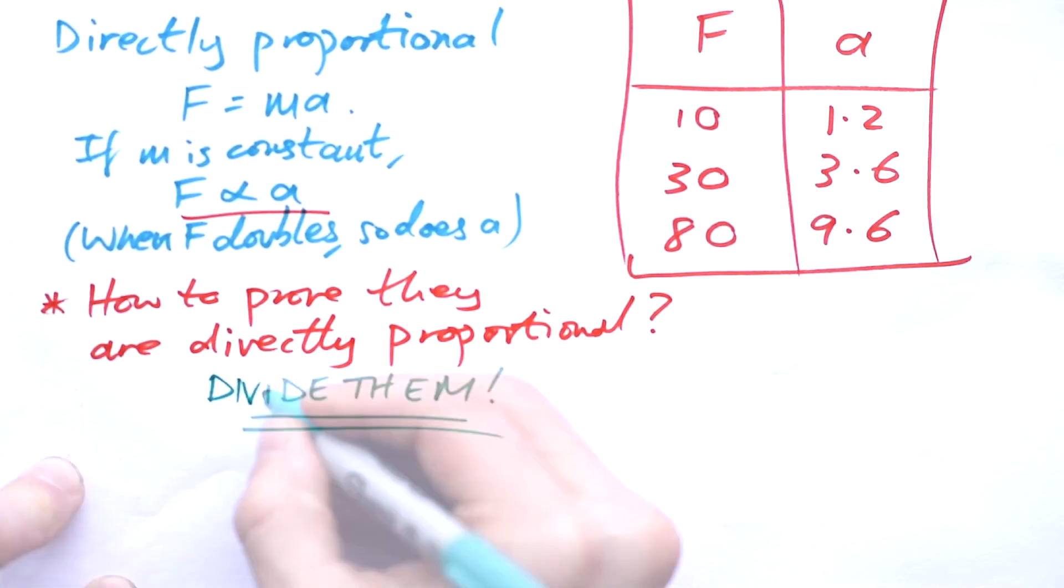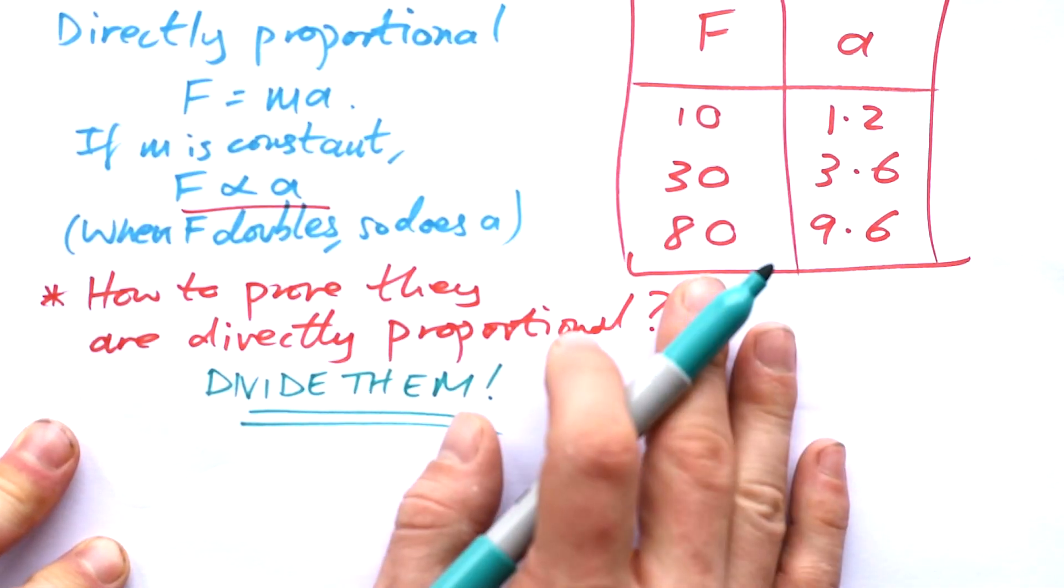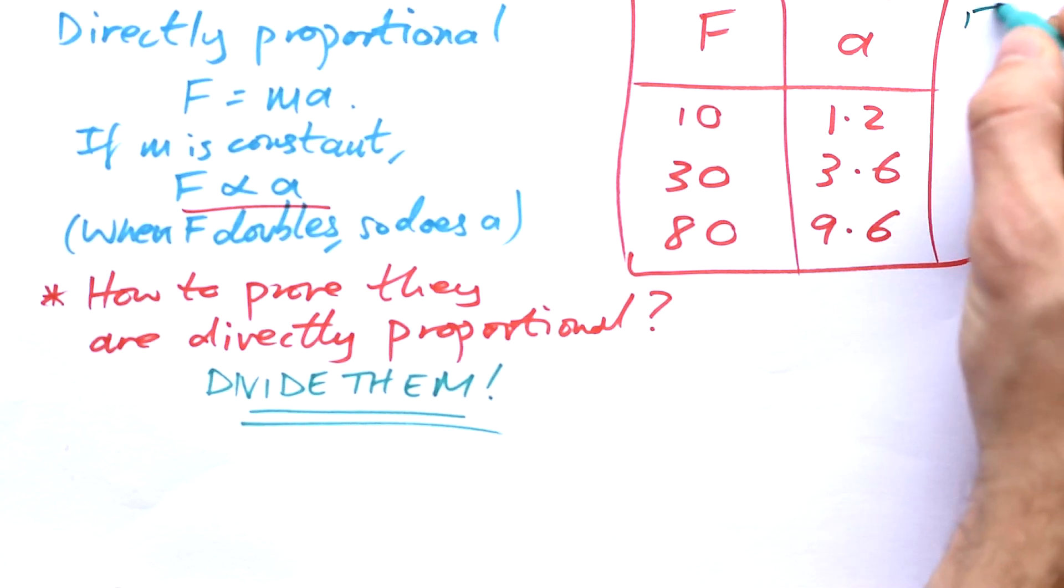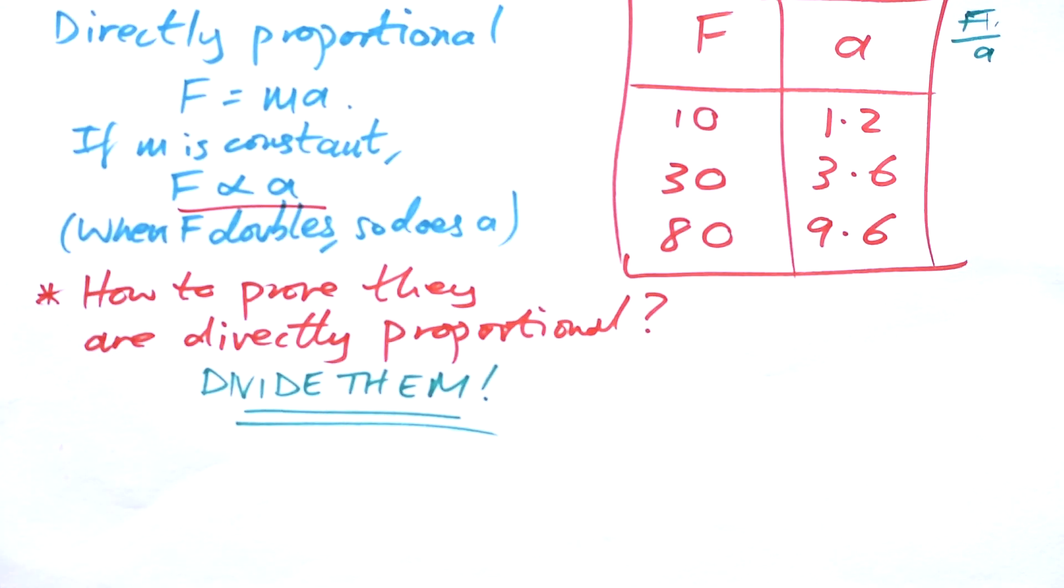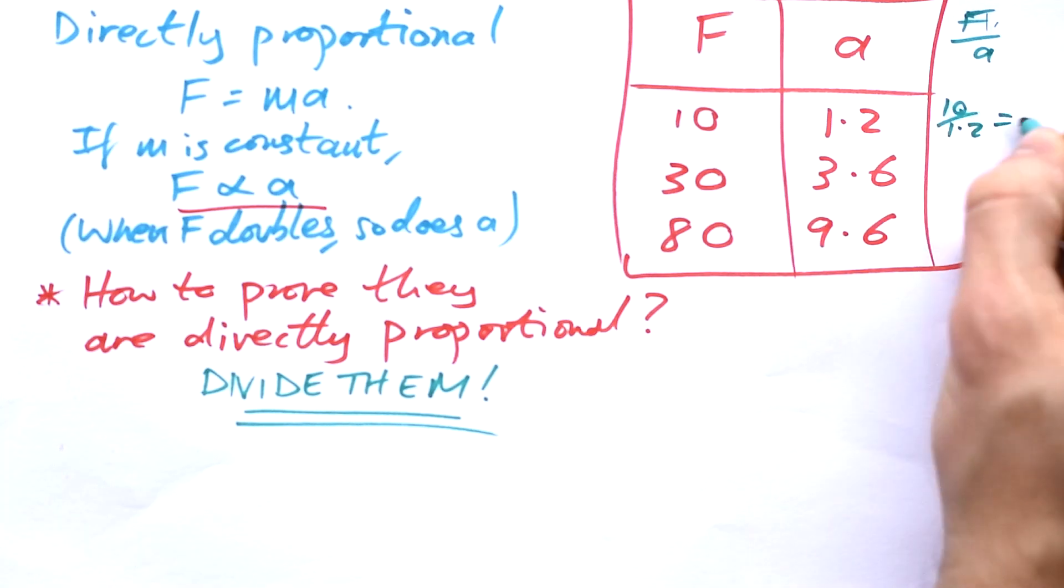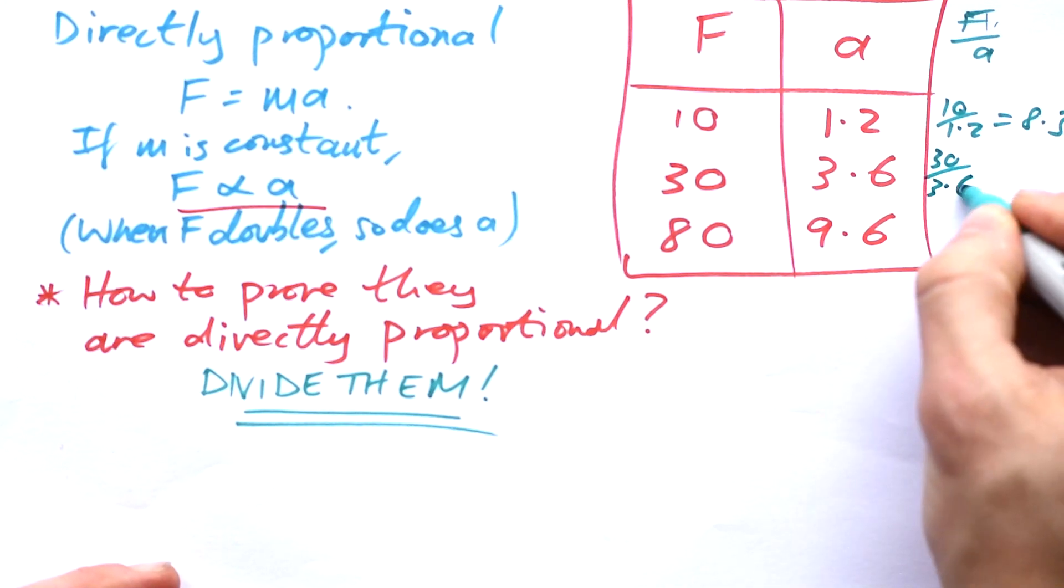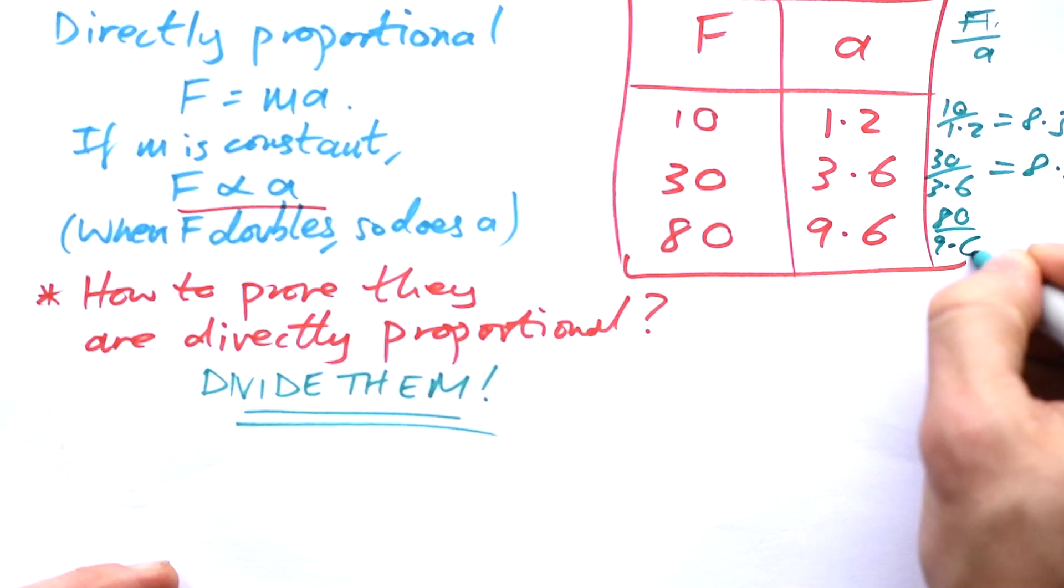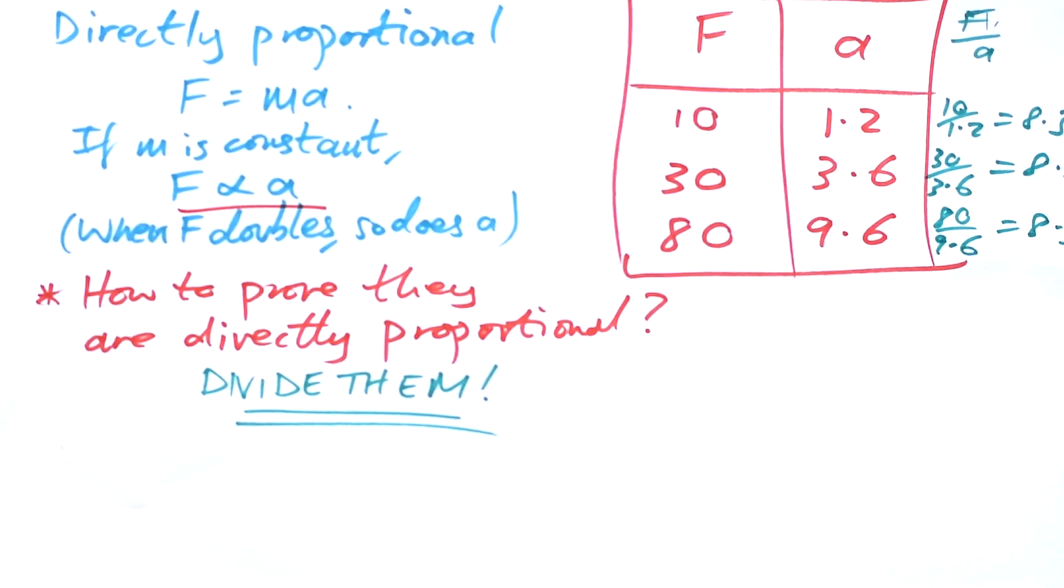We divide them. And actually, it doesn't matter which way around you do it. You can do force divided by acceleration or acceleration divided by force. But what I'm going to do is force divided by acceleration. I've written divide as an over there, as a fraction. That's okay. So 10 divided by 1.2, that gives us 8.3. 30 divided by 3.6 also gives us 8.3. 80 divided by 9.6 also gives us 8.3. If the answers are all the same, then we've just proven that this data, if the answers are all the same, that we've just proven that force and acceleration are proportional.